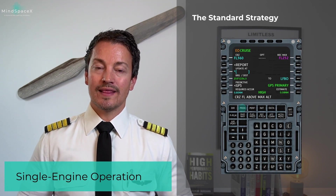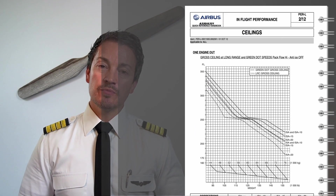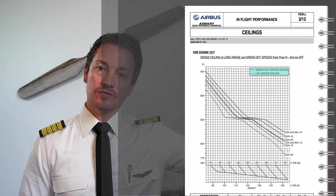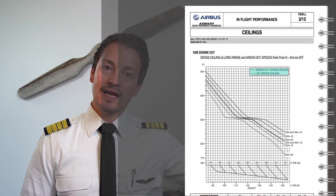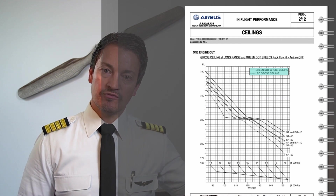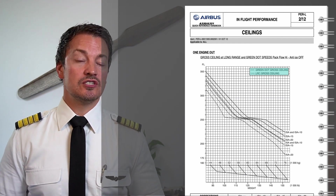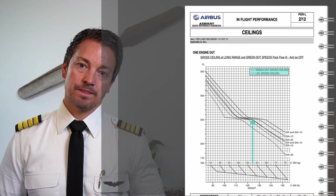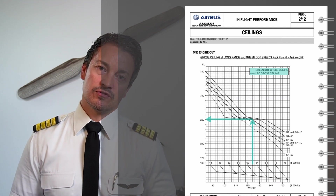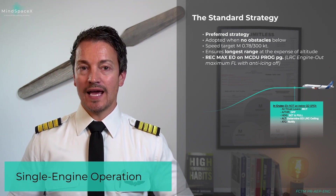Another way of determining that without the MCDU is to use the ceilings chart in the QRH. In the Performance Lima chapter under ceilings, you'll find a table for one engine out, showing long range and green dot ceilings. There are solid lines and dotted lines — I'll be looking at the dotted lines for the long range ceiling under ISA conditions. At 62 tons and ISA conditions, we go across and find it's just over flight level 250.